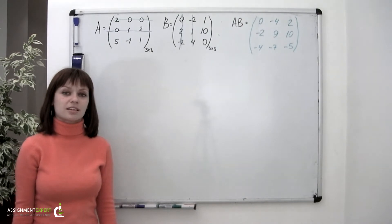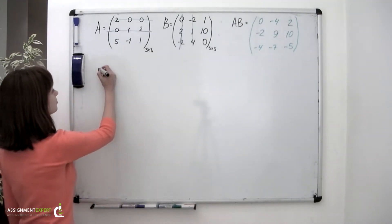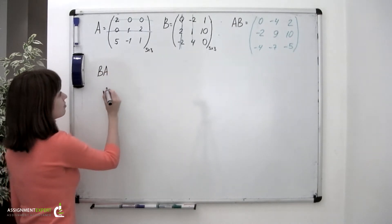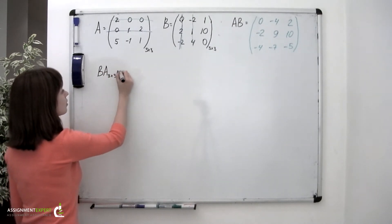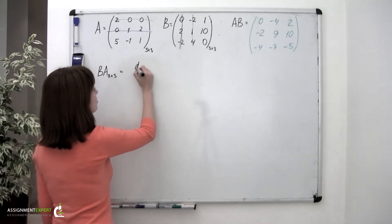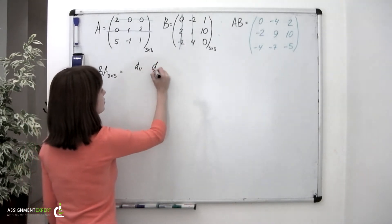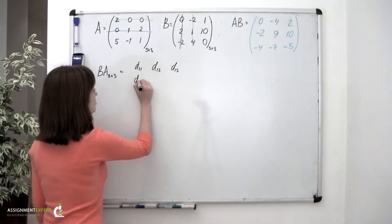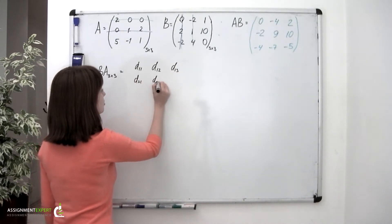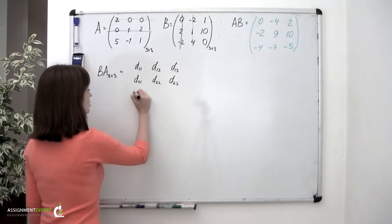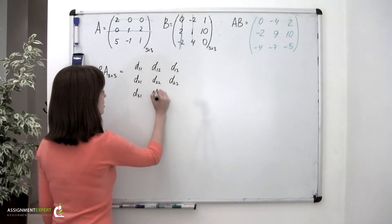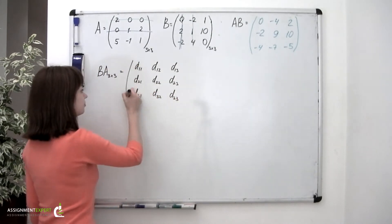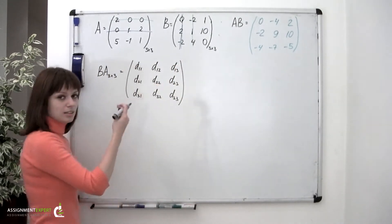Now let us move on to the second product, BA. The BA product matrix will be a matrix of size 3 by 3 as well, formed by elements D sub 1,1; D sub 1,2; D sub 1,3; D sub 2,1; D sub 2,2; D sub 2,3; D sub 3,1; D sub 3,2; D sub 3,3. Let's find these elements.